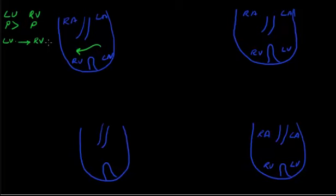This is the first point to remember: anytime when you have a pressure gradient between two compartments, the blood will move from higher pressure to lower pressure. And because there is higher pressure in the left ventricle, the blood will move from the left ventricle to the right ventricle.